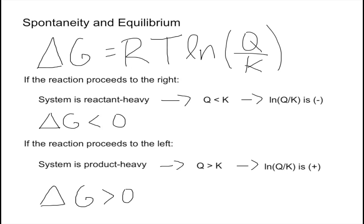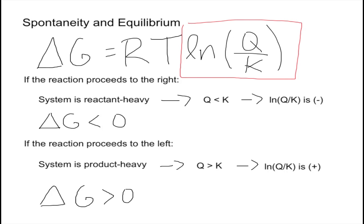In this video I'm going to relate spontaneity to equilibrium. We can do that by comparing our two constants Q and K. The formula we're going to use is Delta G equals R times T times the natural log of Q over K. What really matters is that section that relates Q and K — the ln of Q over K — giving us a ratio.